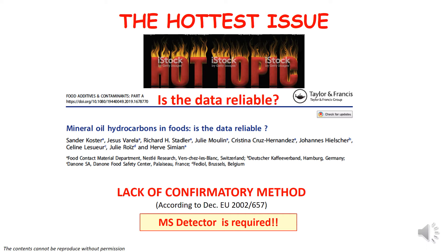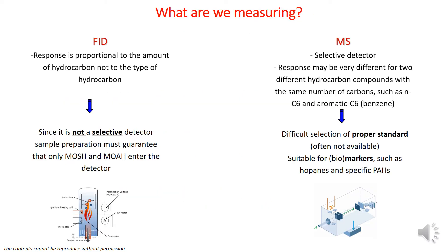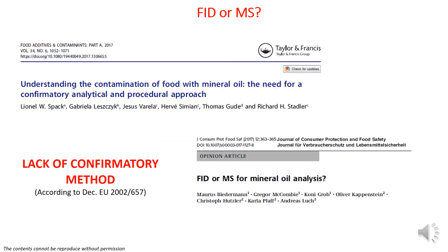One of the hottest topics in MOSH/MOAH determination is the lack of a confirmatory method involving an MS detector, as required by European Decision 2002/657. For quantitative purposes we use FID, which gives virtually the same response factor regardless of the hydrocarbon type. However, FID is not selective, so we must guarantee that only MOSH/MOAH enters the detector. MS gives us the desired selectivity, but the response factor varies with different hydrocarbons and a proper calibration standard is not available — so the question of whether to use FID or MS remains an important debate.